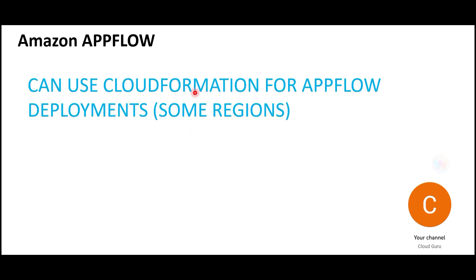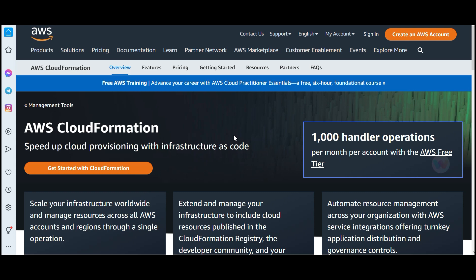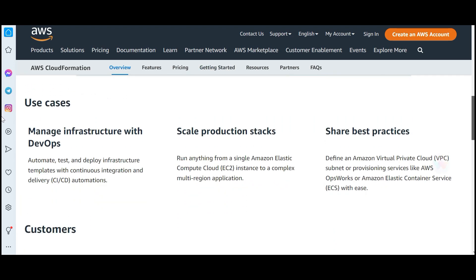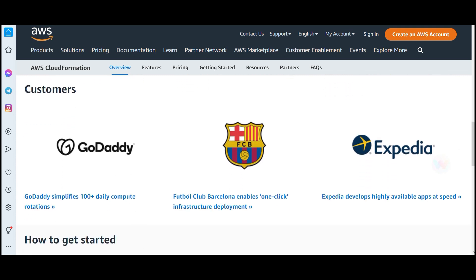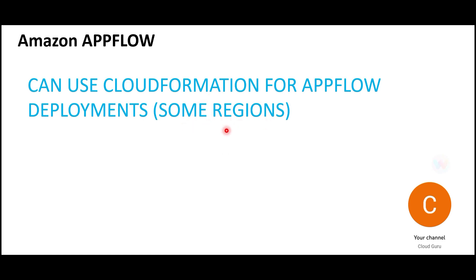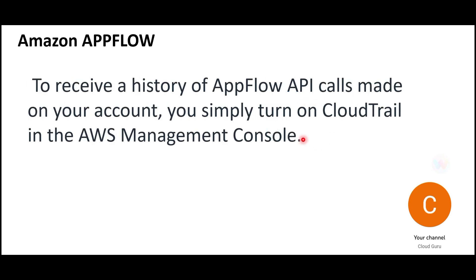Can you deploy AppFlow using CloudFormation? CloudFormation allows you to write infrastructure as code - you write a small piece of code, run it, and your infrastructure is created. However, AppFlow via CloudFormation can only be used in some regions. Also, if you need to review the history of AppFlow API calls, you can use CloudTrail via the management console - remember this for the certification.